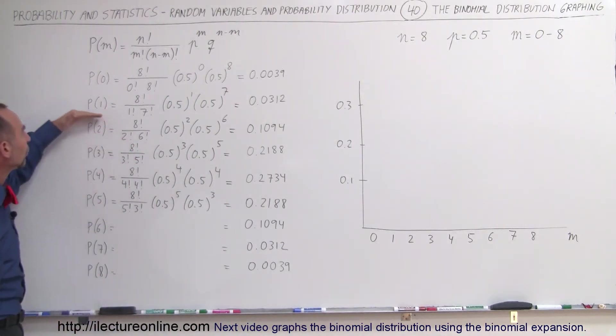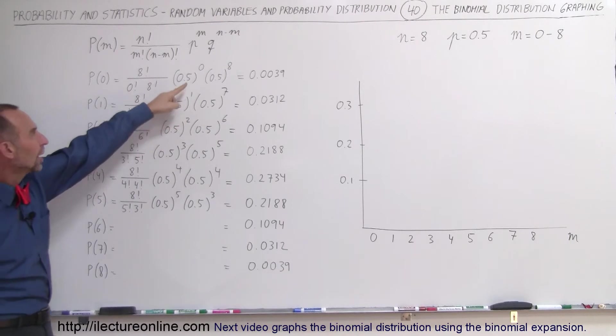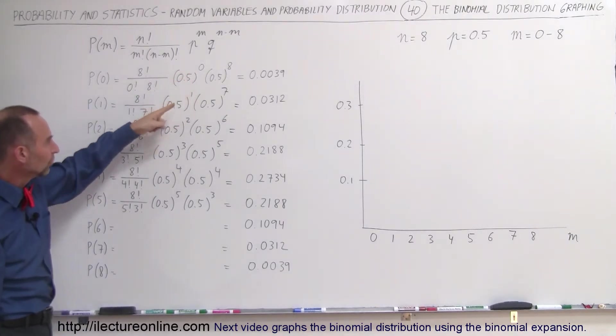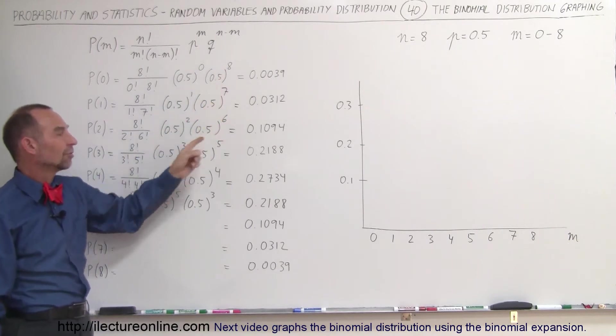We do this again for the probability of 1 success, and so that would be 8 factorial divided by 1 factorial divided by 7 factorial times this quantity. Notice how the exponents go from 0 to 1 to 2 to 3, and then the exponent here goes from 8 to 7 to 6 to 5, and so forth.